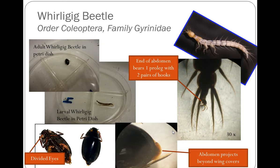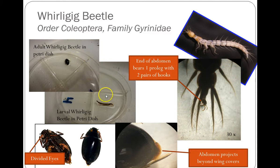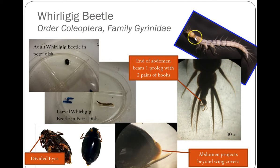Next we have the Whirligig beetle larva. These live in the water — the larva and the adult both live in the water, just like the Riffle beetle. Looking at the petri dish, the larva is down here and the adult is up here. With all the filaments coming off the side, the larva looks kind of like a Dobson fly or an Alder fly, but they're usually a lot more pale and delicate looking. Their head is also a lot wider than their thorax.